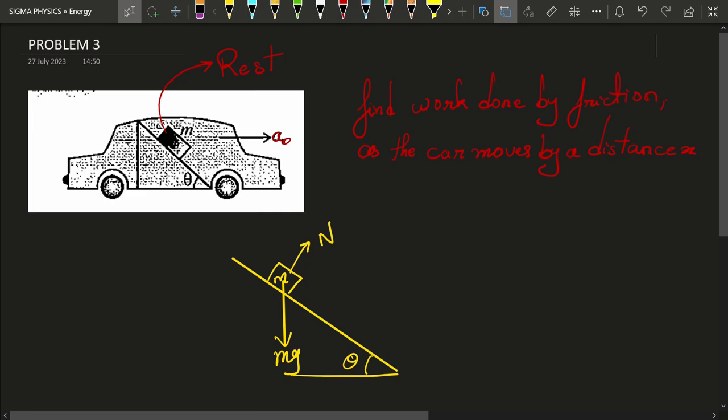that would mean that there is a backward acceleration of this mass. There is a force in the backward direction, which is a pseudo force obviously will act in this case. And that pseudo force will be m a0, because only then the block will be at rest in the car's frame of reference.